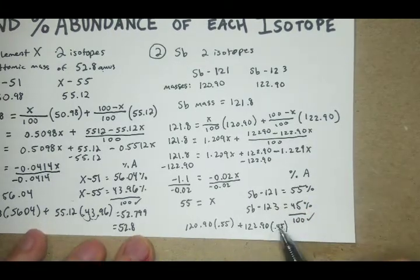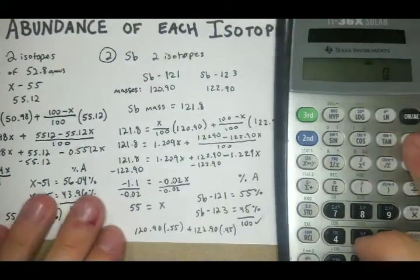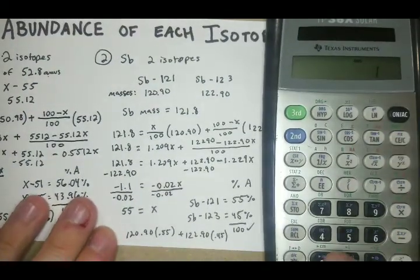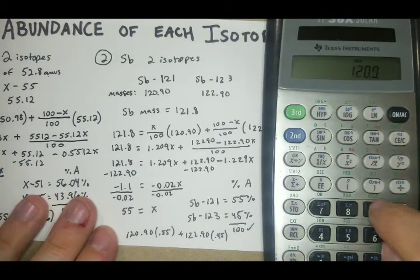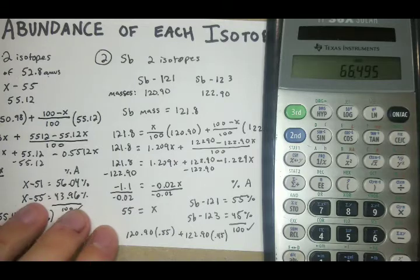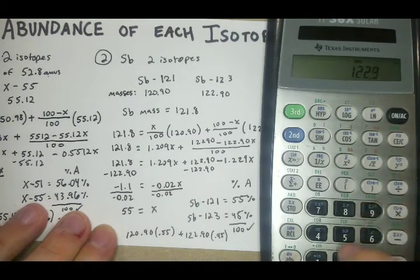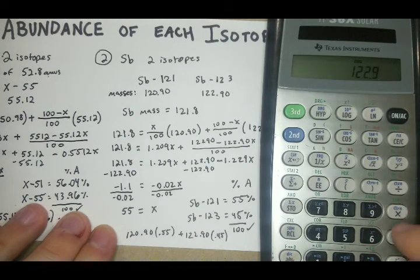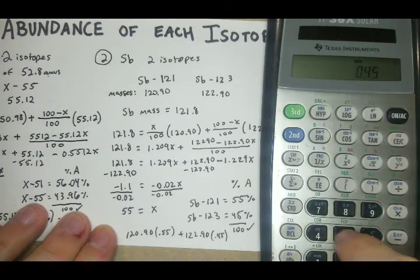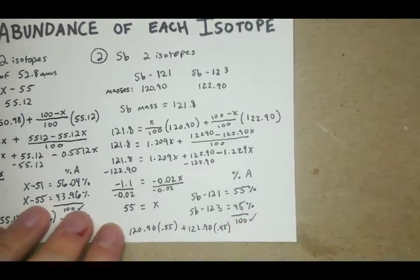This should equal the mass of antimony. We have 120.9 times 0.55 plus 122.90 times 0.45 equals 121.8, 121.8.